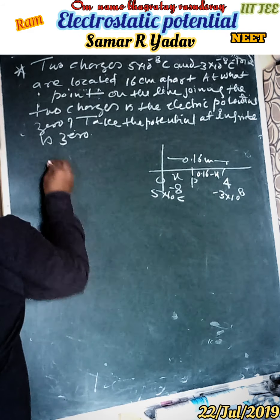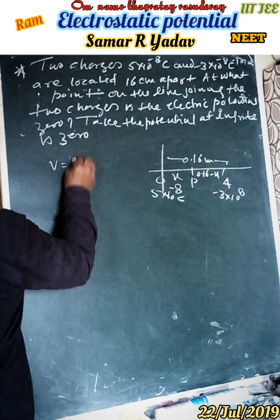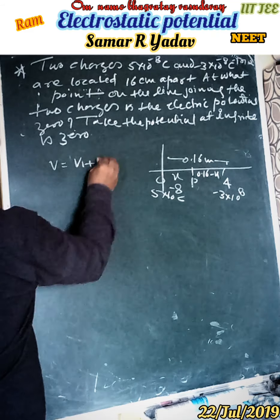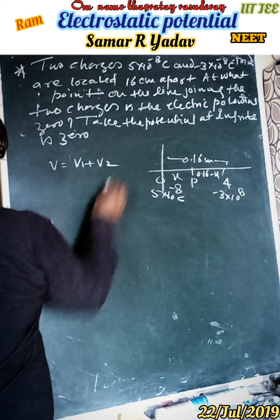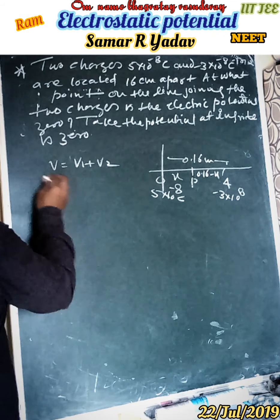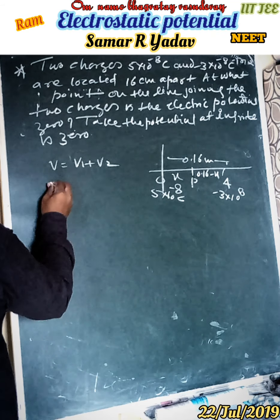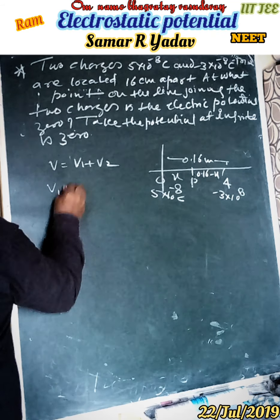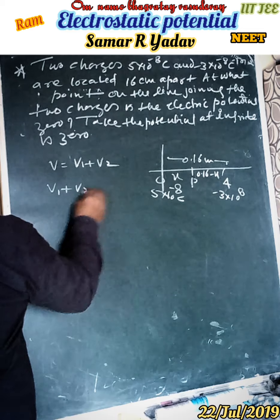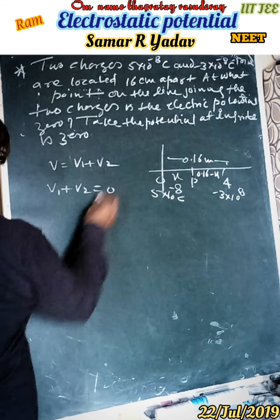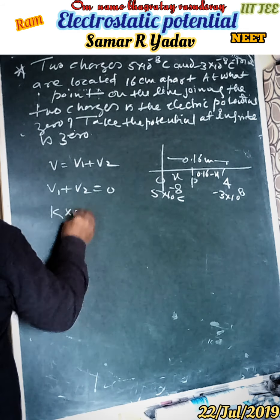We know that V equals V1 plus V2 — that is the principle of superposition. Therefore V1 plus V2 is equal to zero.